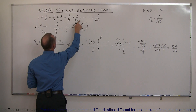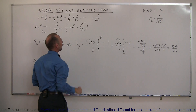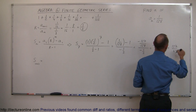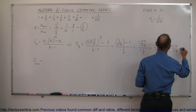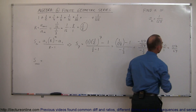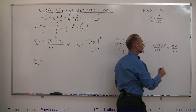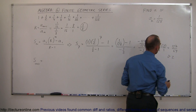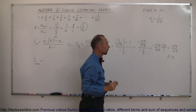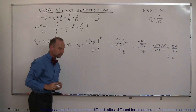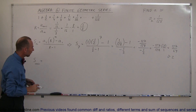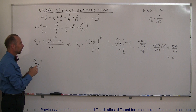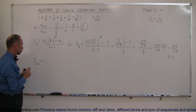So the 7th term in the series is 1/64, and the sum of the first 7 terms equals 127/64, which is slightly less than 2 — almost equal to 2. That's how we find the sum of the first so many terms.